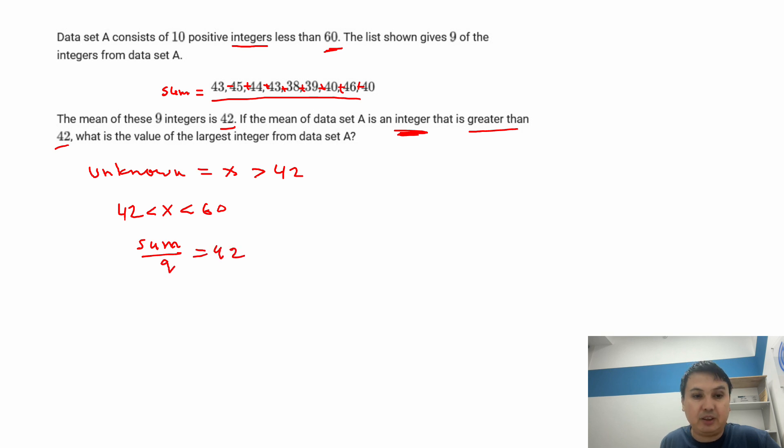So what we know is this sum of the 9 divided by 9 is 42. That's what we know, right? Right. So now, what does it mean?